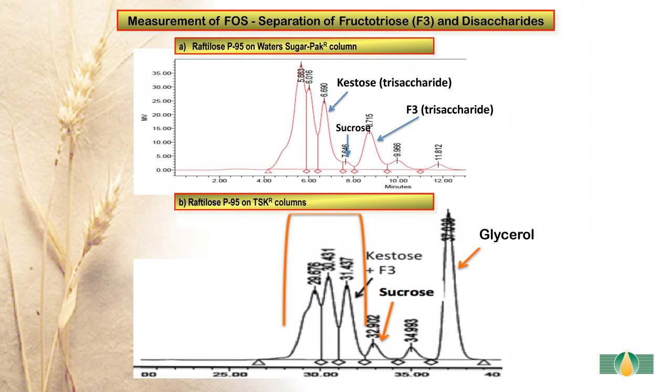In the measurement of fructooligosaccharides using the Waters sugar pack column, a problem is experienced. Fructotriose, which is a major component, elutes after sucrose and thus is not measured. This problem is not experienced when using the TSK columns, where fructotriose elutes as a trisaccharide and is included in the dietary fibre value.